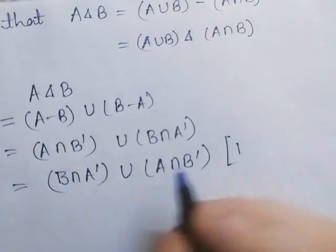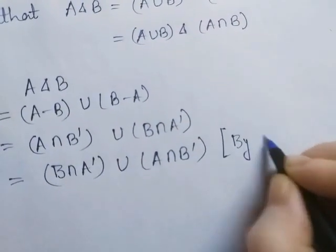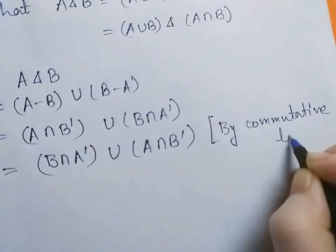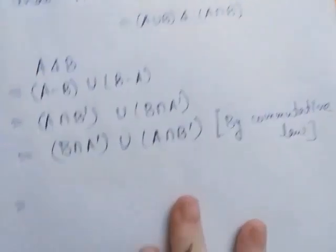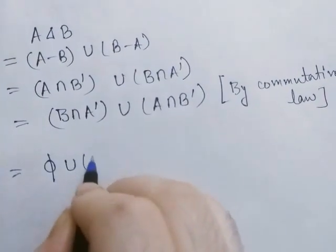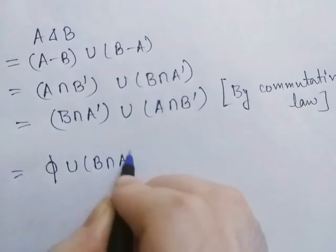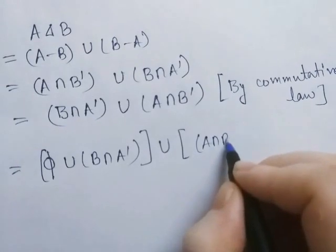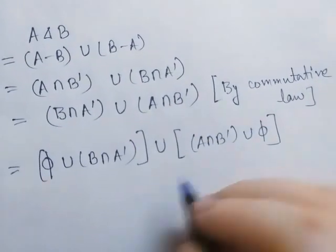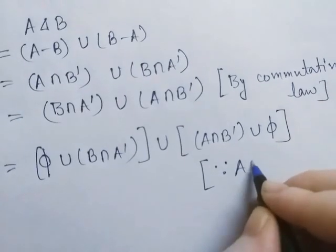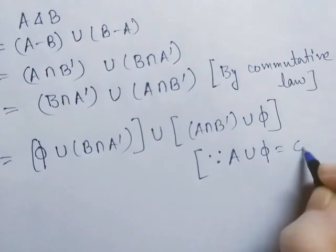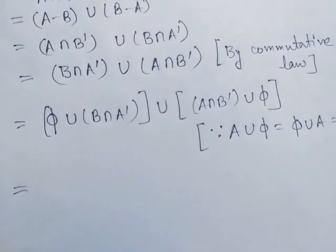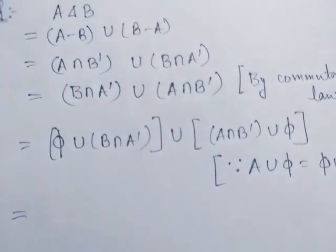By the commutative law, A ∪ B equals B ∪ A. Now we rewrite this as φ ∪ (B ∩ A') ∪ (A ∩ B') ∪ φ, since we know A ∪ φ = φ ∪ A = A for every set A.